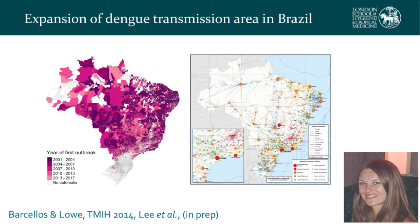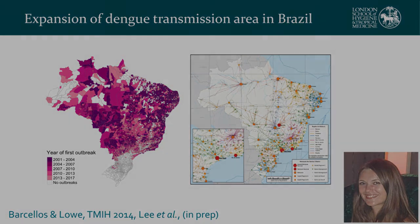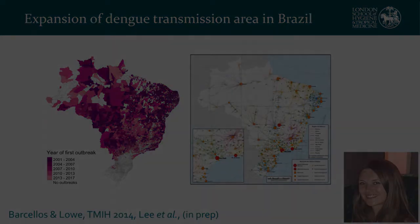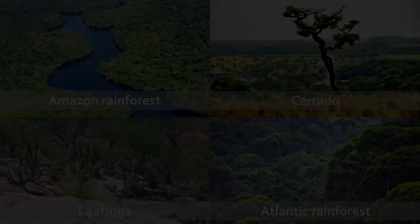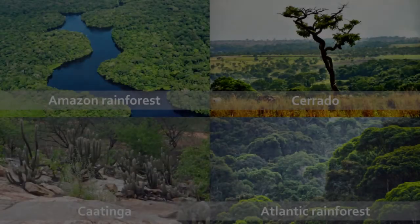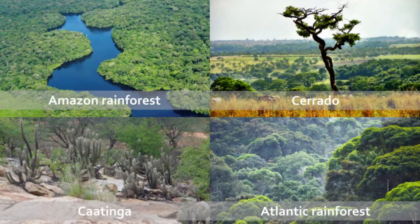We're also thinking about how climate conditions interact with underlying land use types and how this might behave differently — for example, in the Amazon rainforest compared to the very dry northeast region — and what that might mean in terms of early warnings.